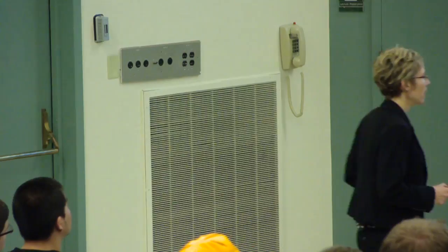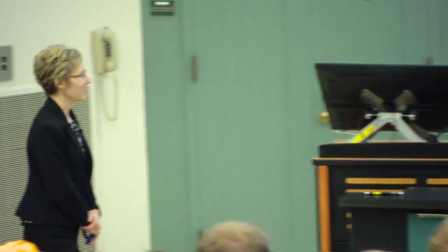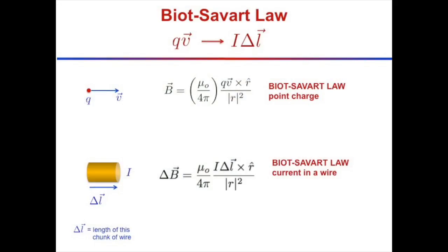Let's think more deeply about these equations. To calculate the magnetic field of either a point charge or a current, we need the velocity. I could measure the particle's velocity and predict the magnetic field, or measure the current in the wire and predict the magnetic field.